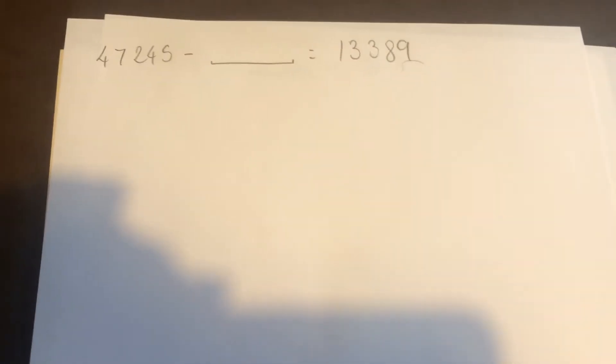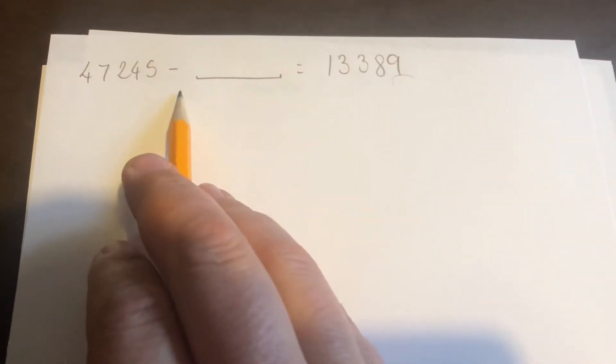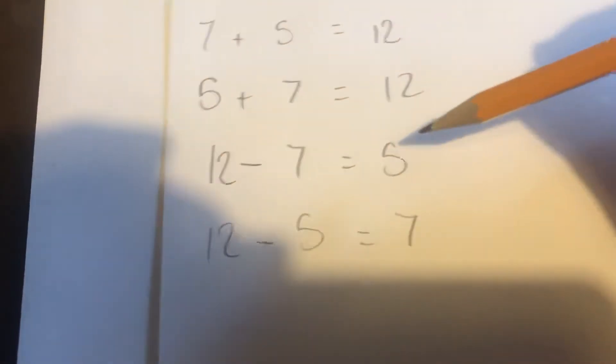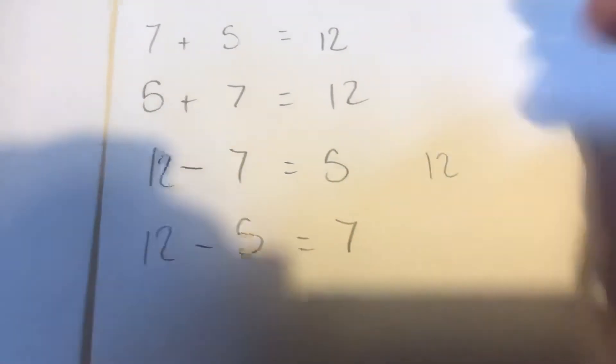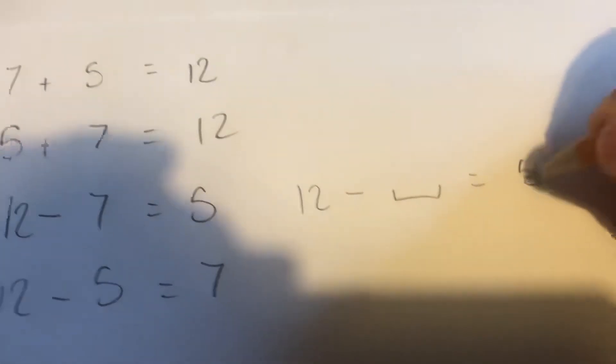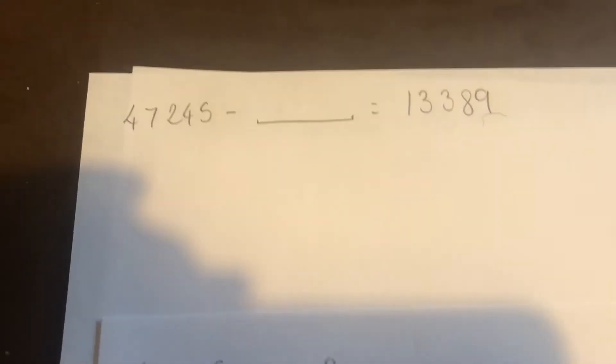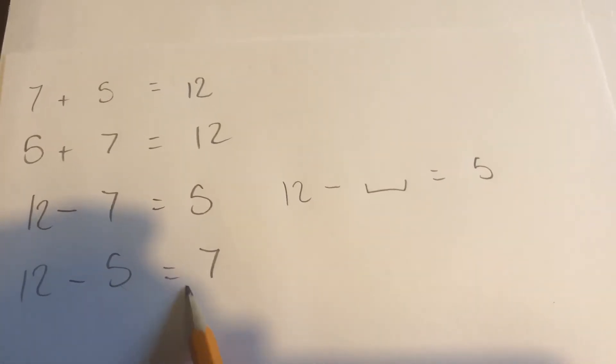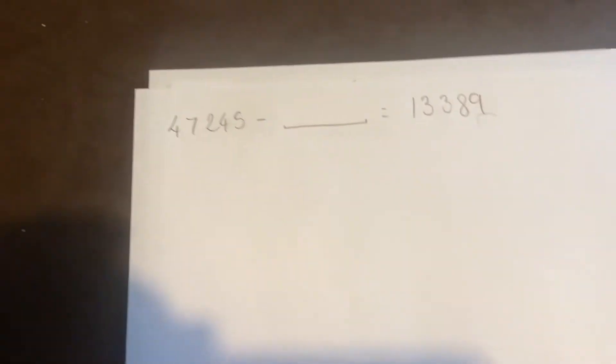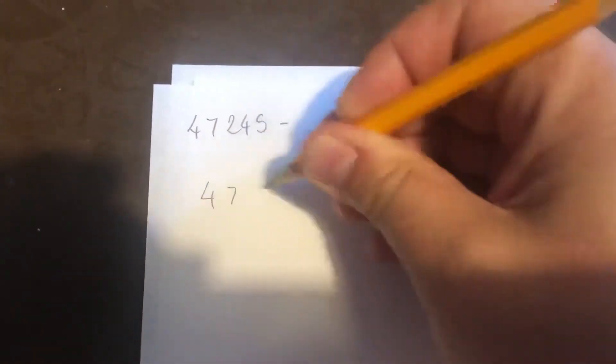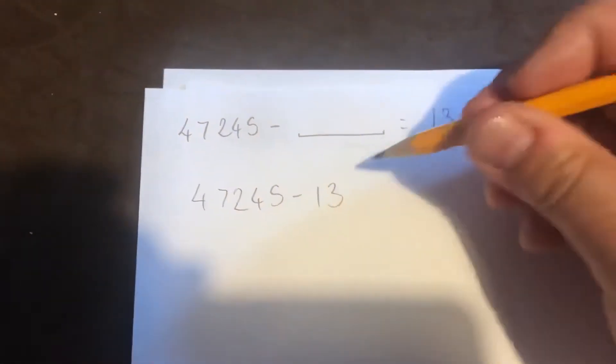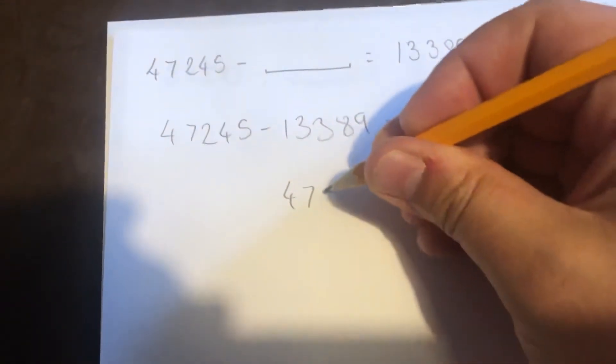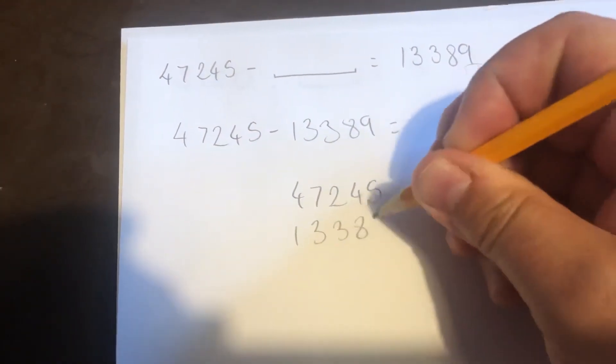So this is the first question from one of the arithmetic tasks: 47,245 take away something equals 13,389. Going back to my question here, 12 take away 7 equals 5. If I imagine that as a missing statement, 12 take away something equals 5, just like this tricky one at the top, what I can do is 12 take away 5 equals 7. I can just change it around. So I've got my question here: 47,245 take away 13,389 equals, and that's going to give me the answer here, this missing number. To do that, I'm just going to pop it into a column because that's how we've done all of our subtraction.